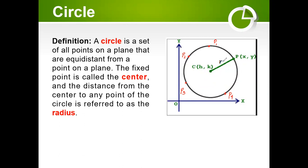And that distance is called the radius of the circle, where C is the center of the circle. So when we talk about equidistant, the distance will always be equal.